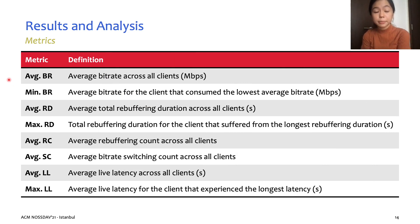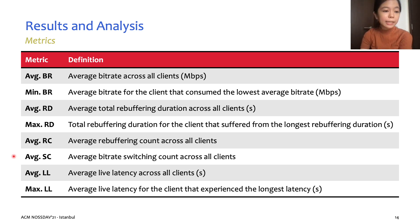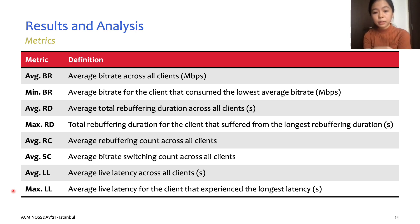To evaluate the performance in our experiments, we logged and calculated all the metrics listed in this table for each of our test runs. Specifically, we have the bit rate metrics — average bit rate and minimum bit rate — as well as the rebuffering metrics — average rebuffering duration, maximum rebuffering duration, and average rebuffering count. We also added the average switching count, as well as average live latency and maximum live latency for the low-latency streams. Our paper contains the full results of all three test scenarios, but for this presentation we will highlight the key findings and observations.